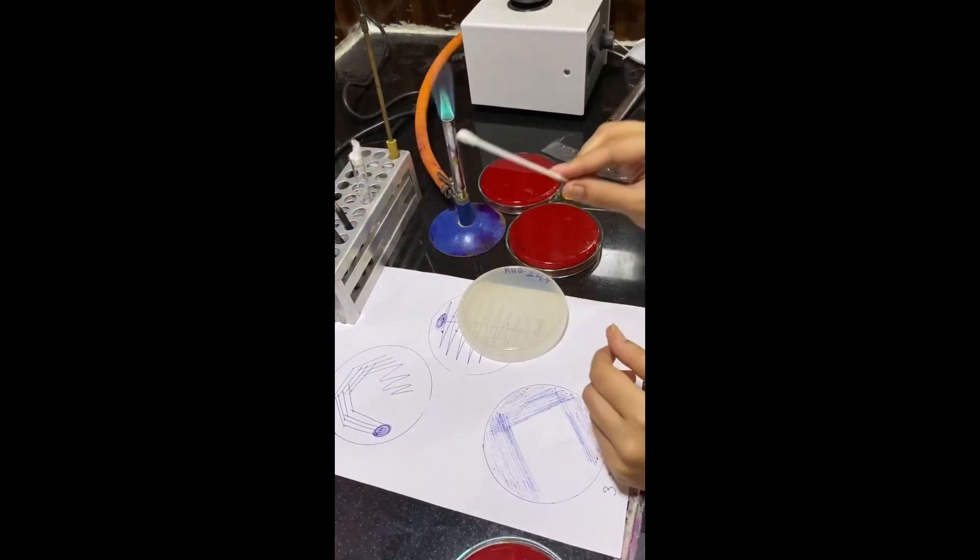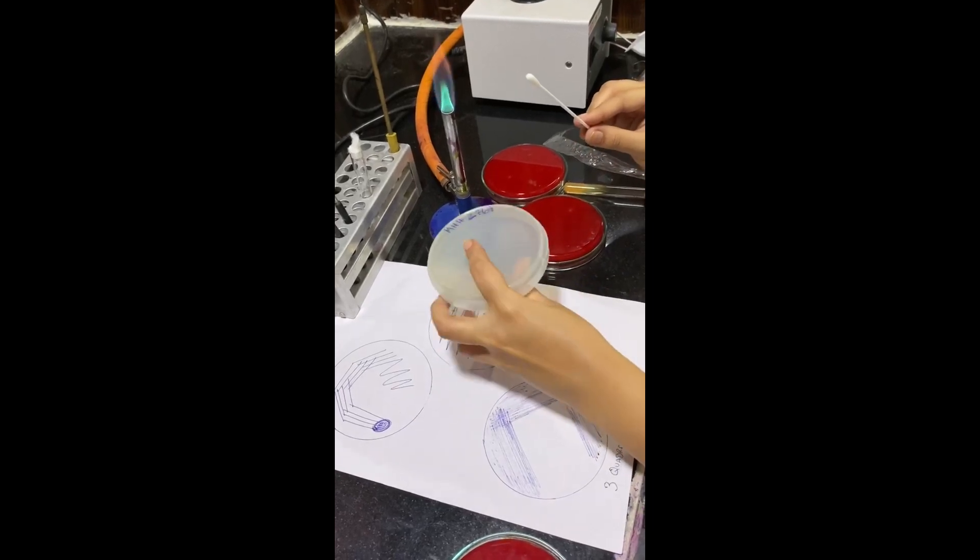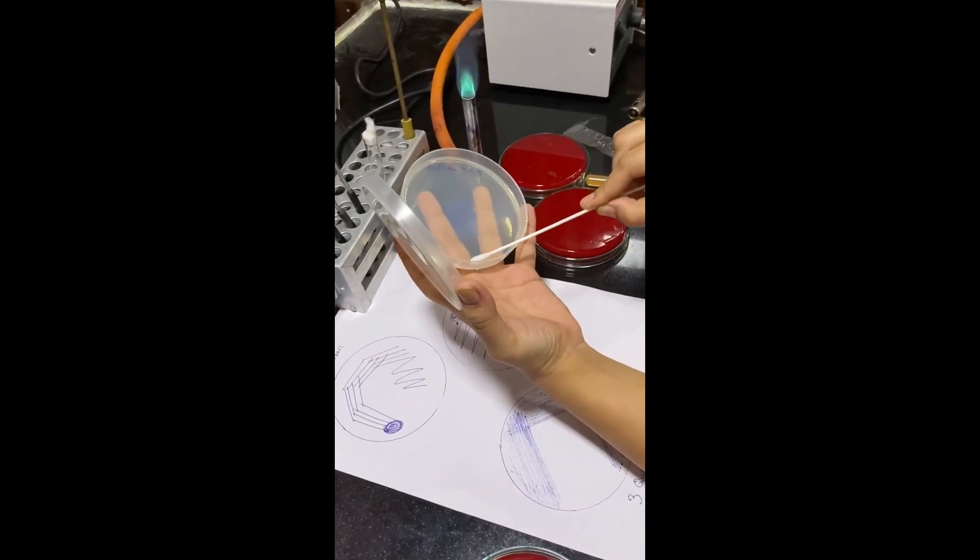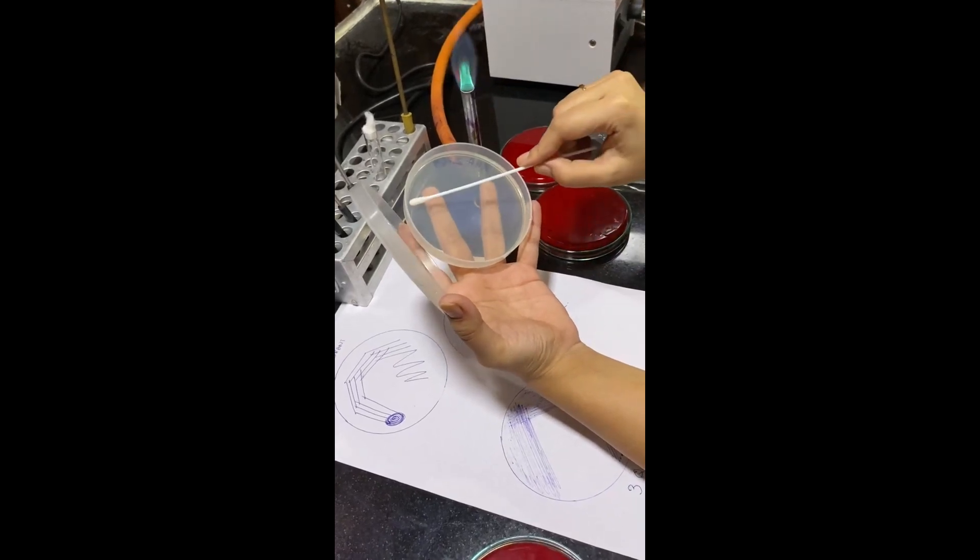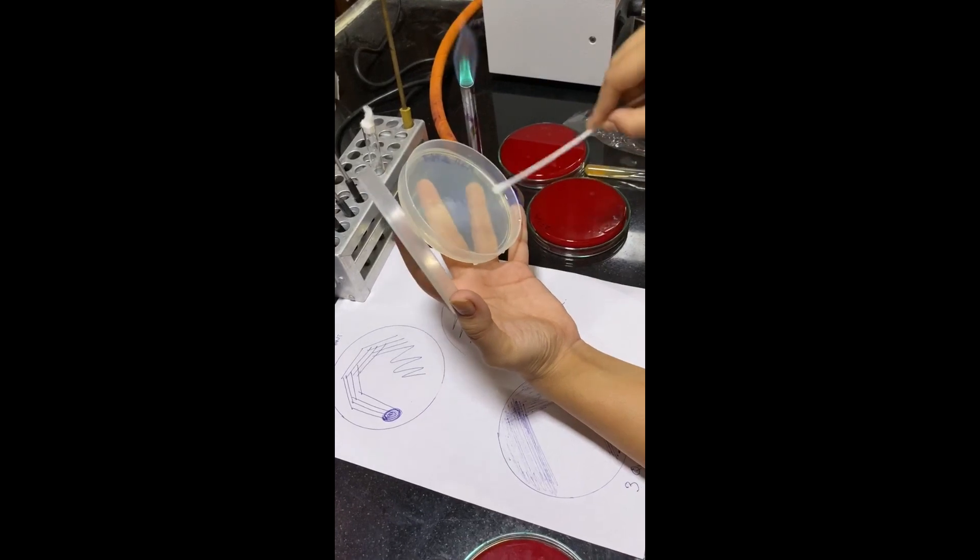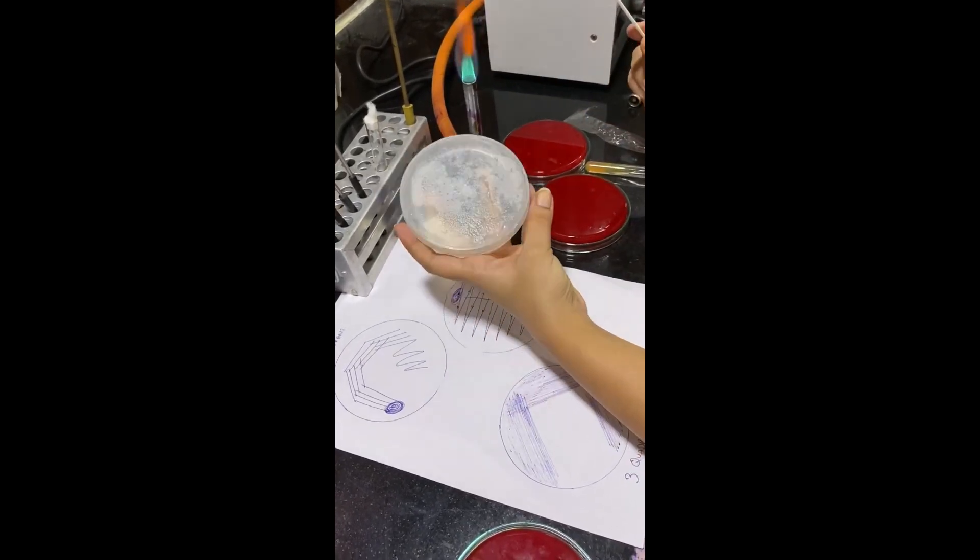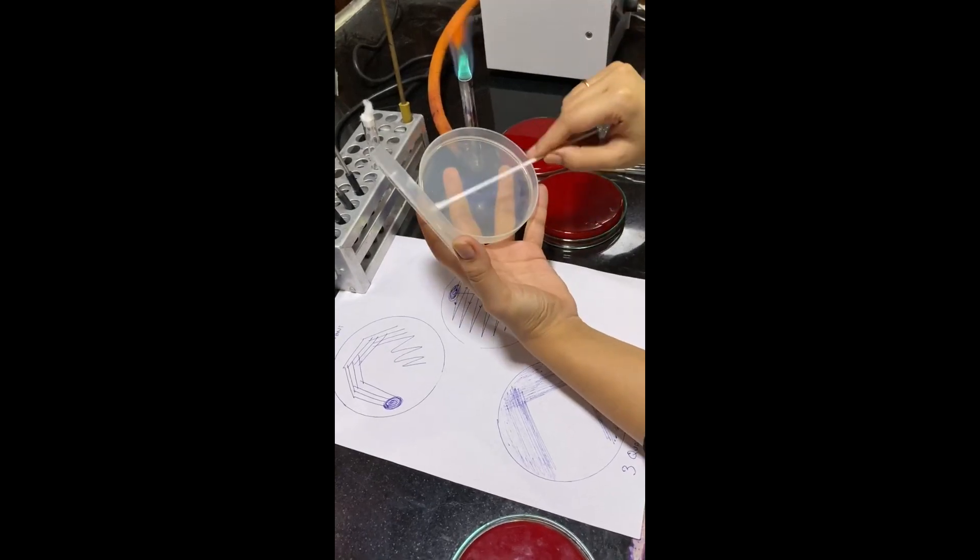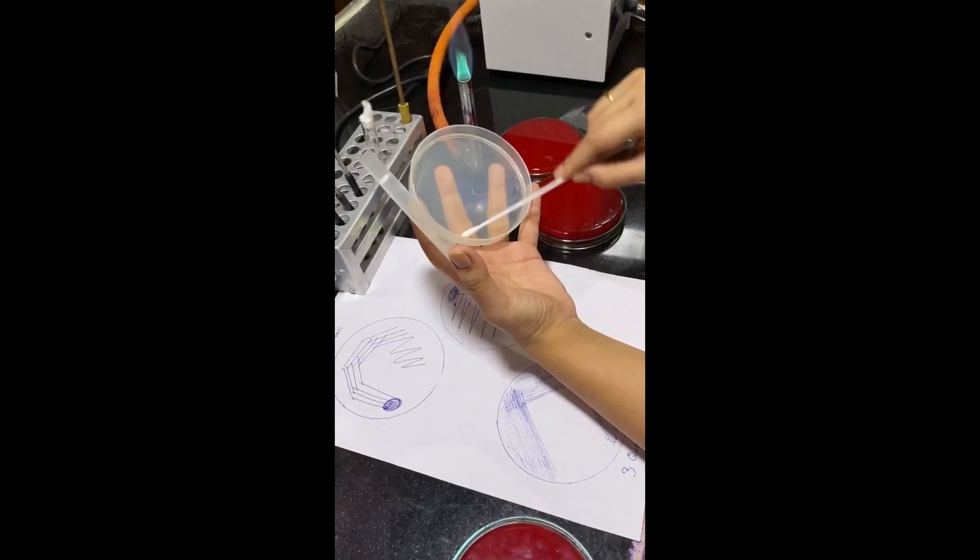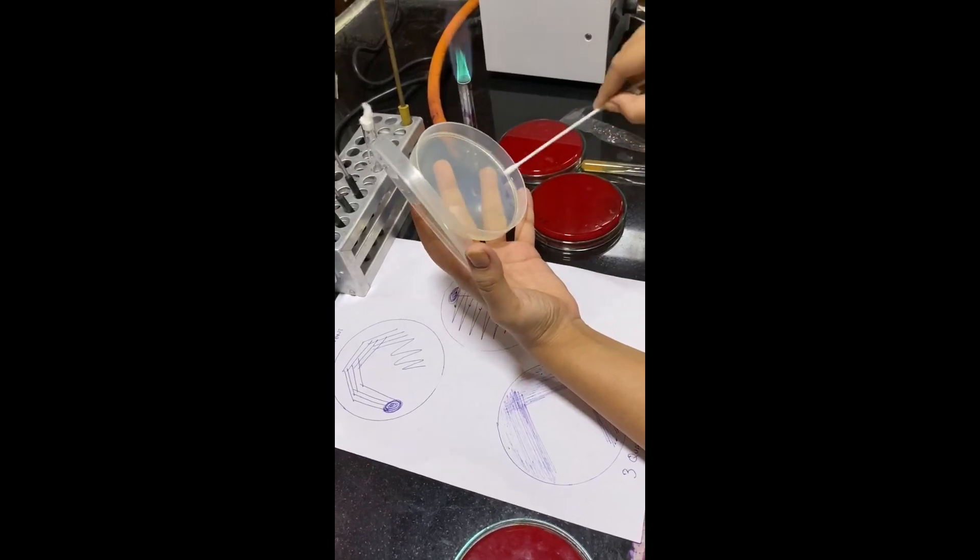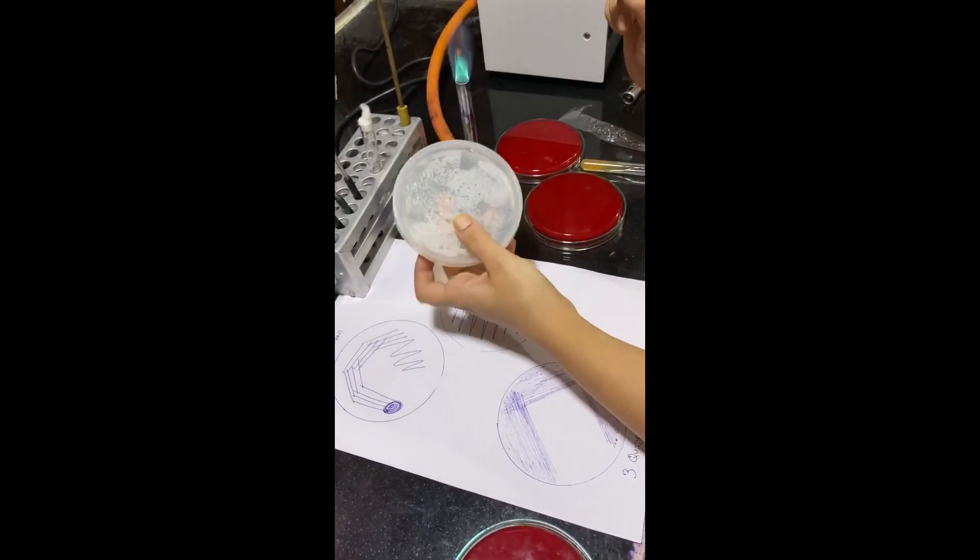Drop off the excess inoculum. Now holding it like a pen, draw a plus sign and start streaking in this manner, right till the end of the plate. Close it. Tilt it. Again similar manner. Do not leave much of a space in between. Otherwise the lawn pattern will not be obtained.